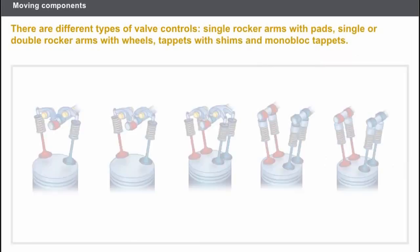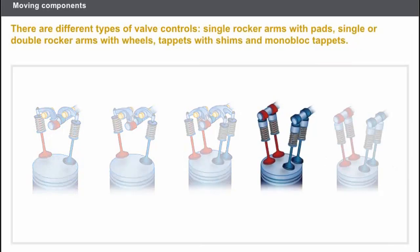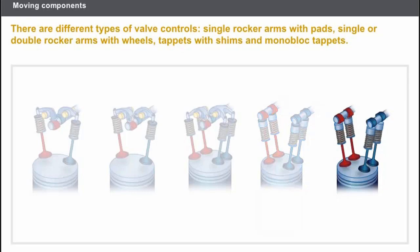There are different types of valve controls: single rocker arms with pads, single or double rocker arms with wheels, tappet with shims, and monoblock tappets.